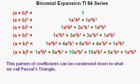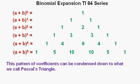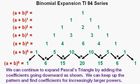This pattern of coefficients can be condensed down to what we call Pascal's triangle. Here the coefficients are highlighted in green. And here is the triangle with just the coefficients left over. We can continue to expand Pascal's triangle below by adding the coefficients going downward as shown. We can keep up the pattern in finding coefficients for increasingly larger powers.